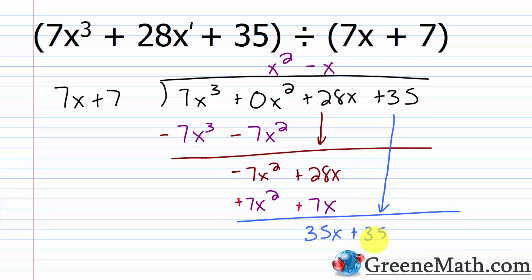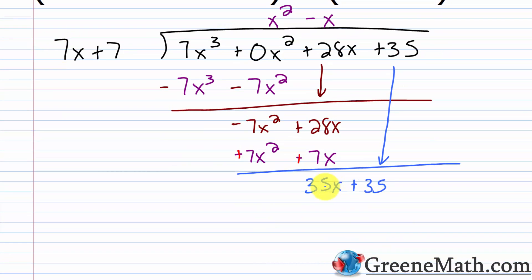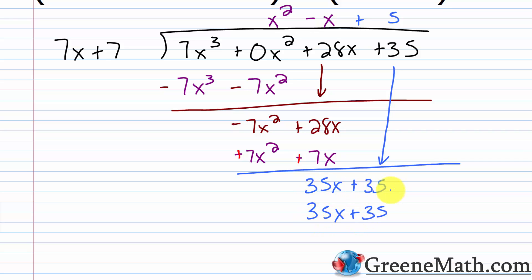So we have 35x, then bring down plus 35. Then 7x goes into 35x: 35 divided by 7 is 5, and x over x is 1, so this is plus 5. Multiply: 5 times 7x is 35x, and 5 times 7 is 35. Subtracting 35x plus 35 from itself gives 0 — so there's no remainder. We get x squared minus x plus 5.